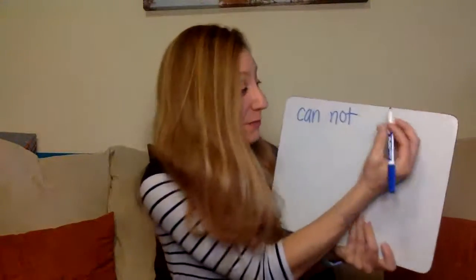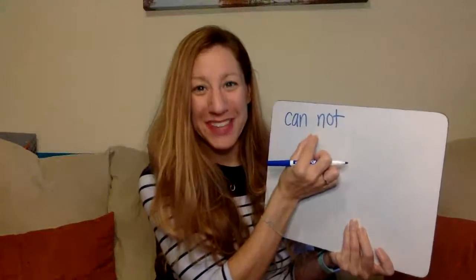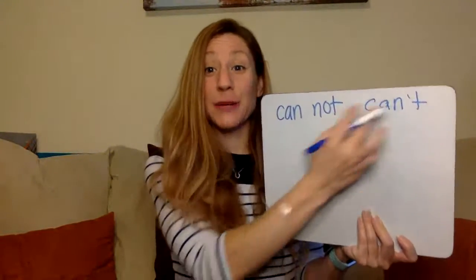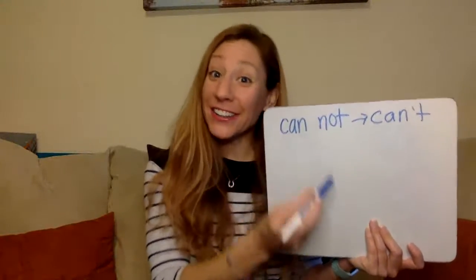Next we're gonna do some word work. We've worked on contractions before — when we take two words and smush them together, taking out some of those letters and putting in apostrophes. Let's start with these words and see if we can make them into a contraction. 'Can' and 'not' — we can take out one of the N's and the O to make can't. Can not becomes can't. We often say can't and don't even realize it comes from 'can not.' Same idea, just different words.